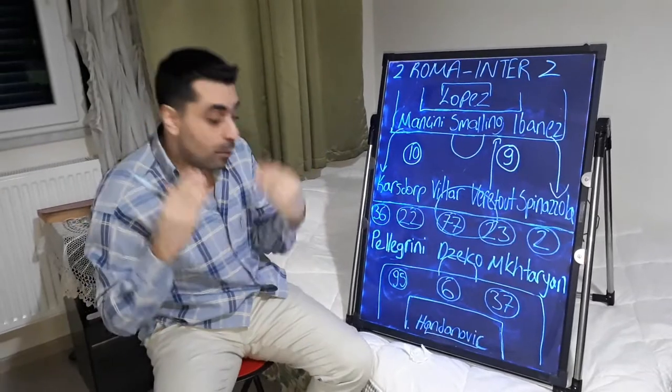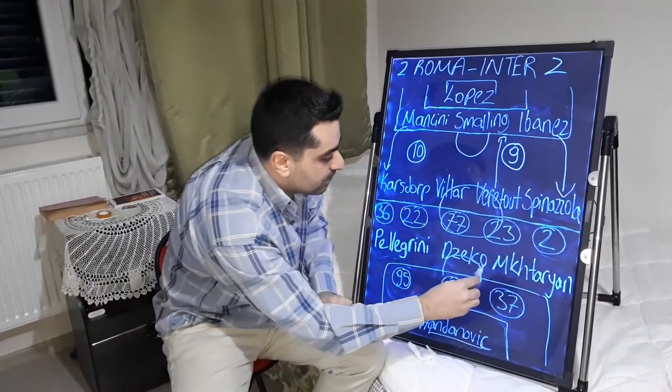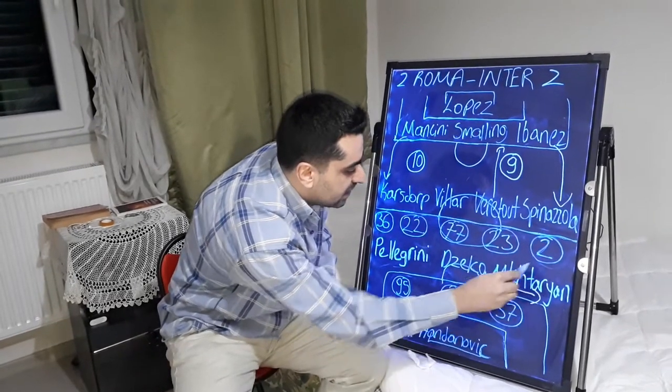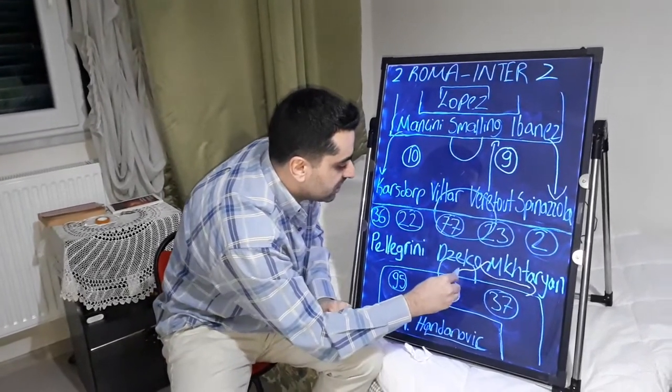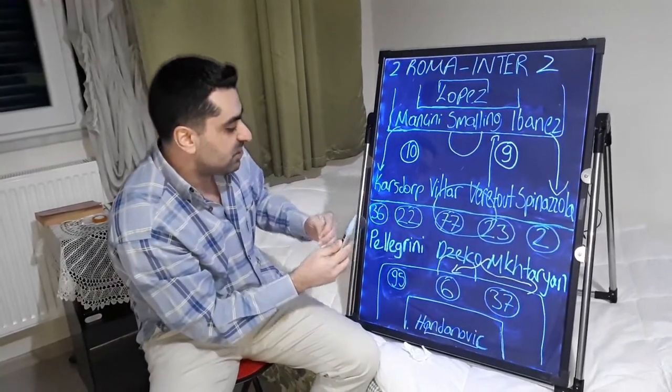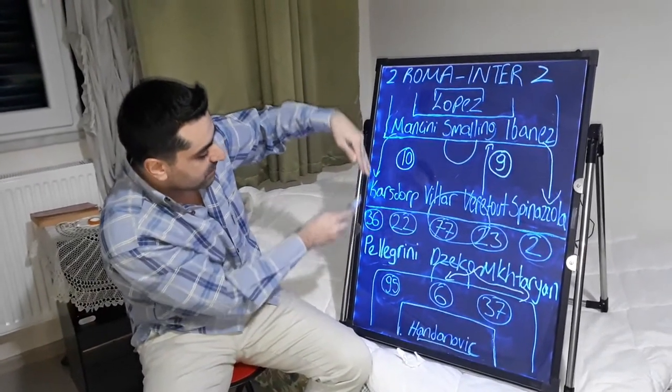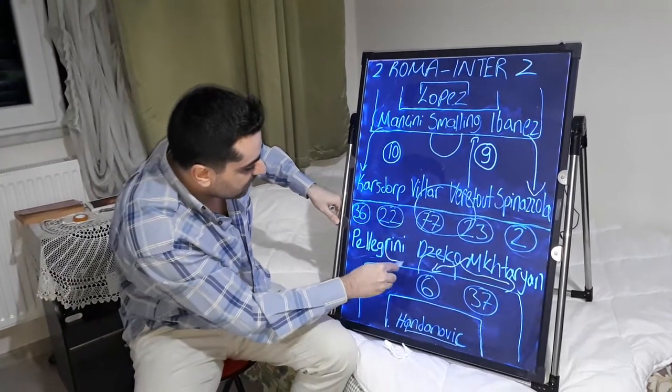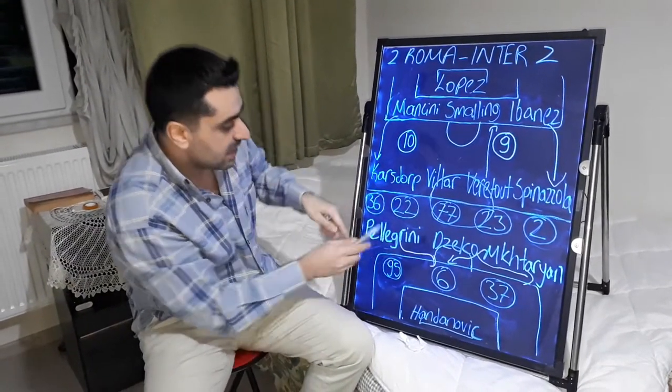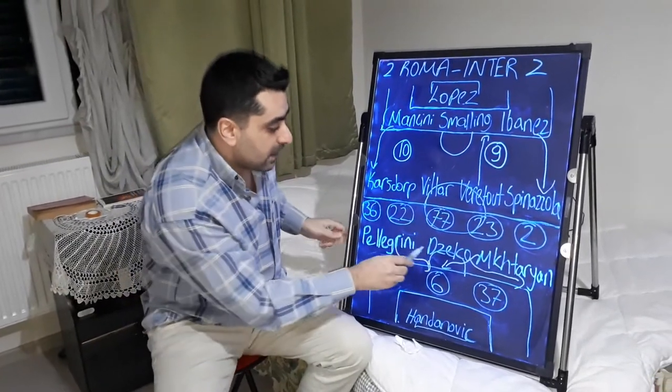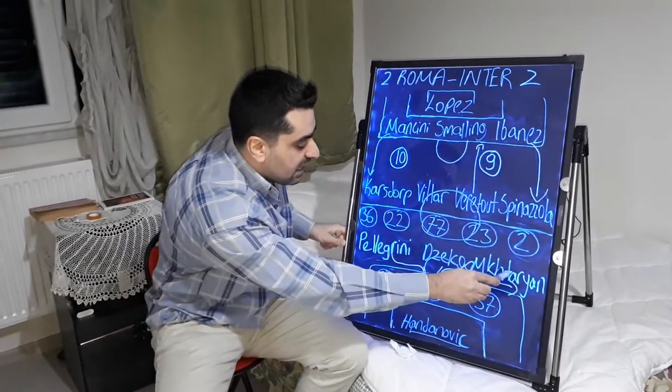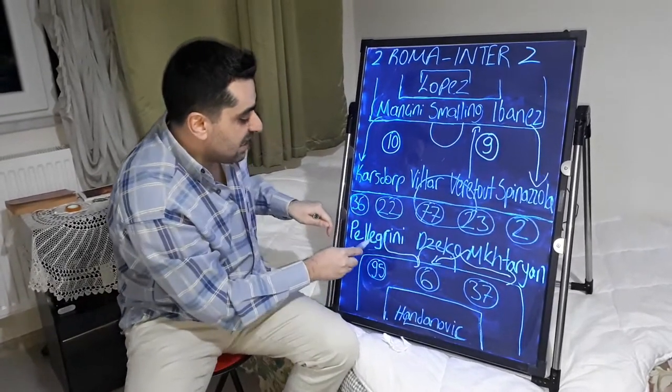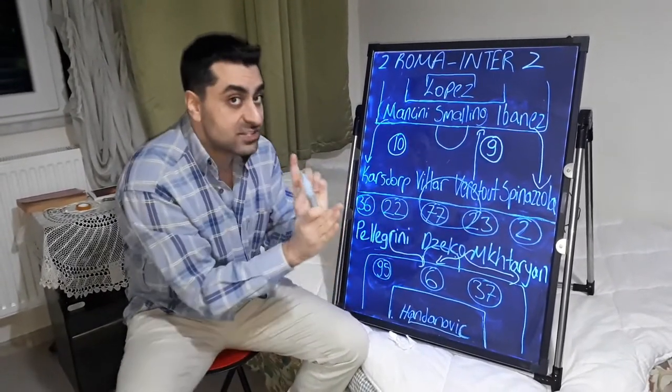And in Roma attacks, Edin Dzeko sometimes came to left wing and Mkhitaryan came to middle. Here, they changed their positions between each other and Pellegrini came from the right and he came inside like this. For example, in Roma's goal, Dzeko came to left and he gave his pass to Mkhitaryan. And Pellegrini came from the right and scored the Roma goal.